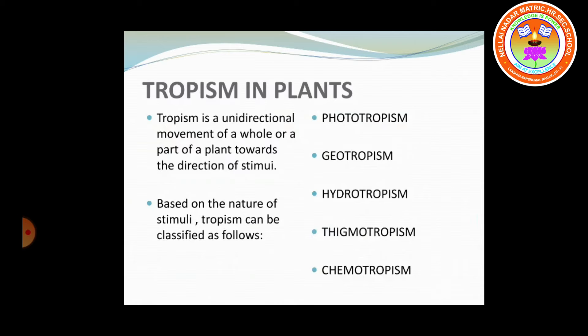Tropism in plants: tropism is a unidirectional movement of a whole or part of a plant towards the direction of stimuli. Based on the nature of stimuli, tropism can be classified as follows: phototropism, geotropism, hydrotropism, thigmotropism, and chemotropism.